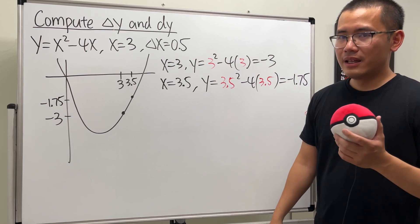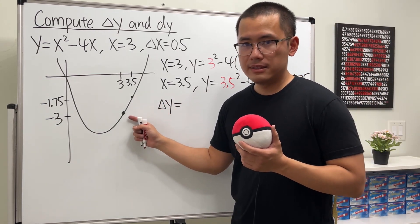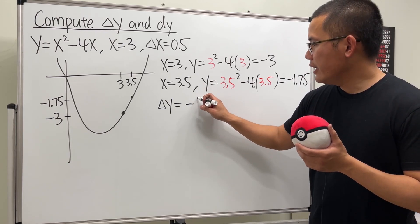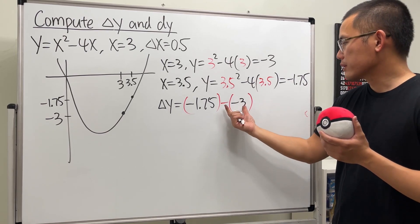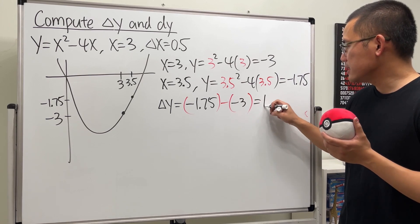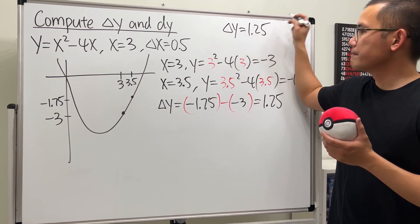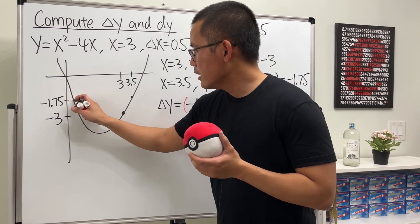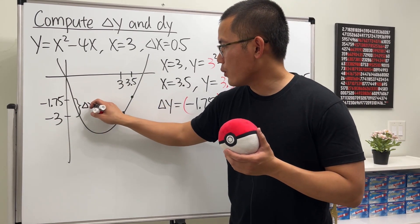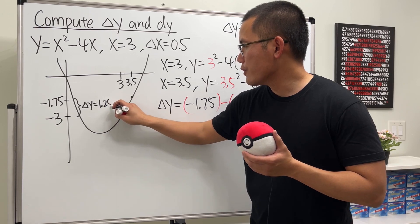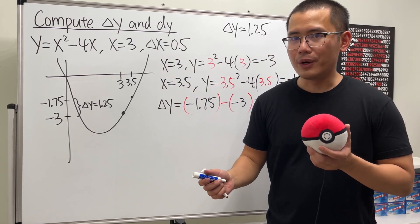Now with those two y values we can compute Δy. It's just the new y value minus the original y value: Δy = -1.75 - (-3) = 1.25. So Δy = 1.25. In the picture, this is the vertical distance from the original point up to the new point on the curve — that's the change in y.